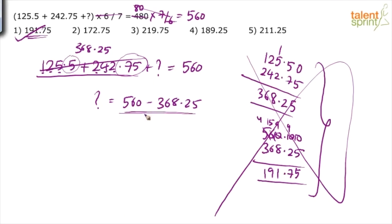So, question mark will be what? 560 minus 368.25. You see this part of calculation that we have done on paper is not needed. Why am I asking you not to put pen on paper for this one? By the time you write 125.5 here, you have spent about 2 seconds. Then you write 242.75, another 2 seconds. So, basically 4 to 5 seconds are gone and you are only writing the numbers again on paper, which is a clear waste of time. You are killing your time here.